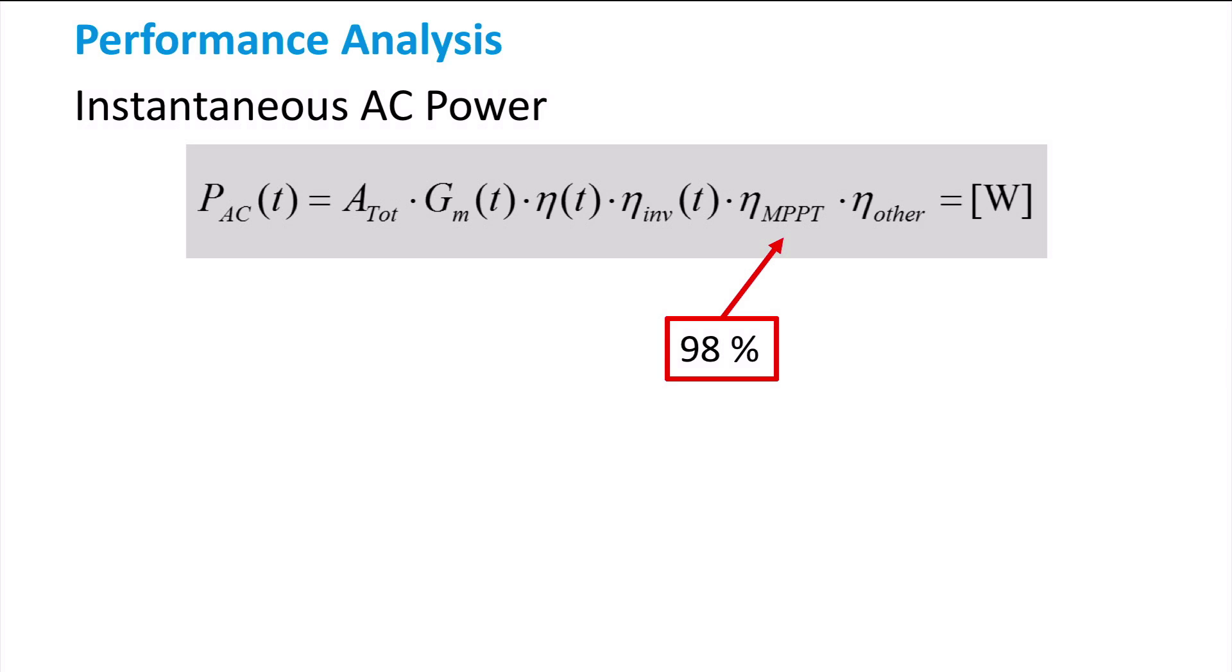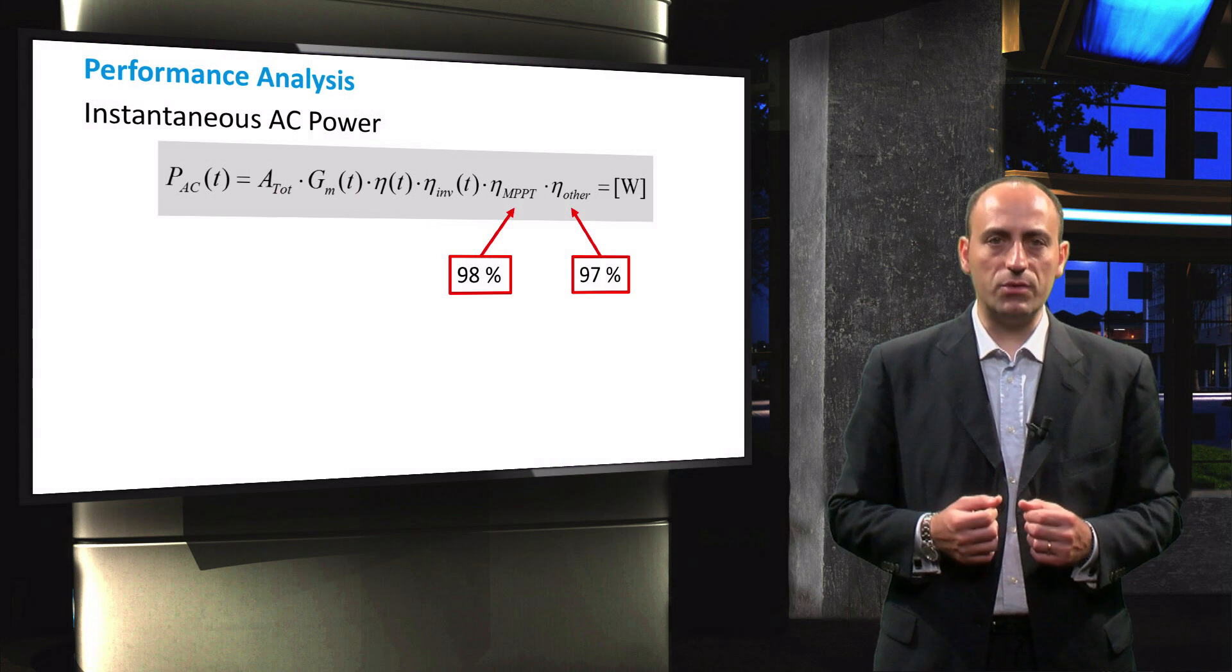For a more advanced analysis, you can also calculate its instantaneous values by coding and simulating the MPPT algorithm separately. In the other efficiency parameter, soiling, cabling and any other losses that could occur in a PV system are included. This efficiency parameter is usually set at 97%.